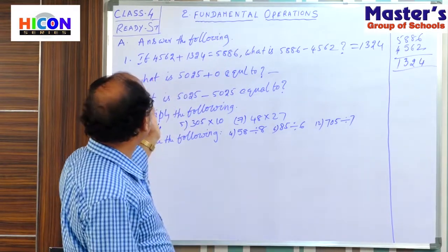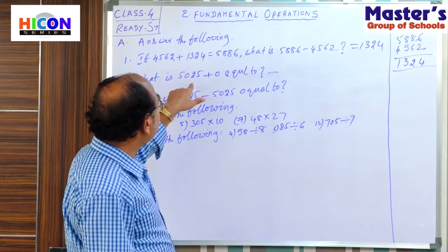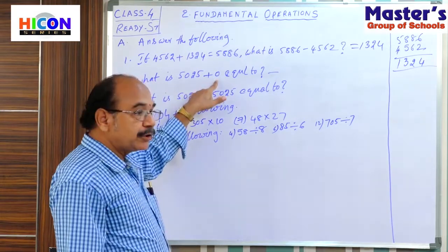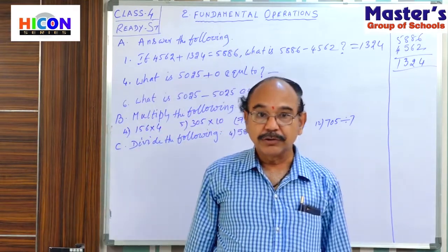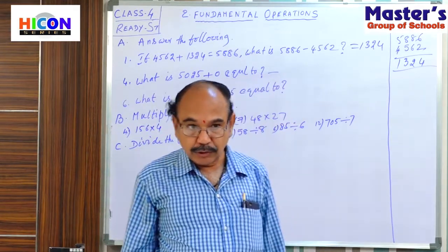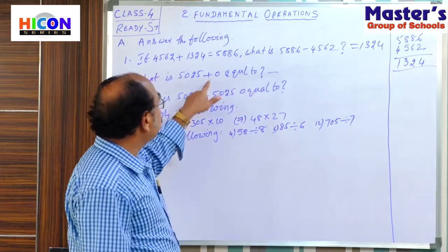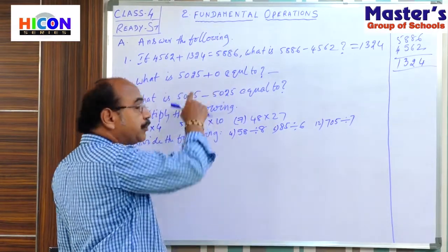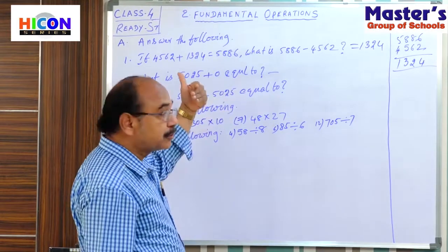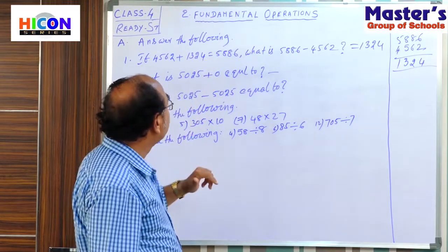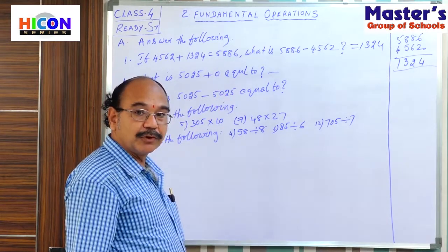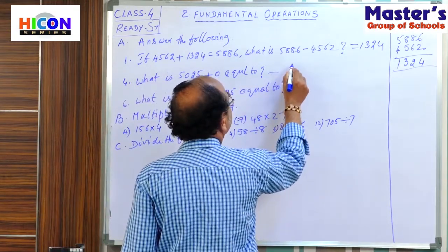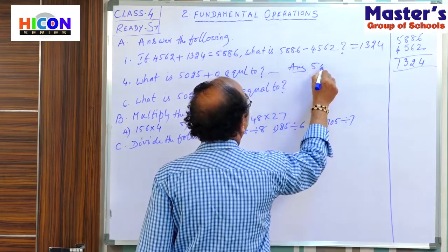Now let us go to the next question, the fourth question. What is 5,025 plus 0? Here, what is added? 0 is added. You know that 0 has no value. That's why if we add 0 to any number, the answer is the same number. The result is 5,025.